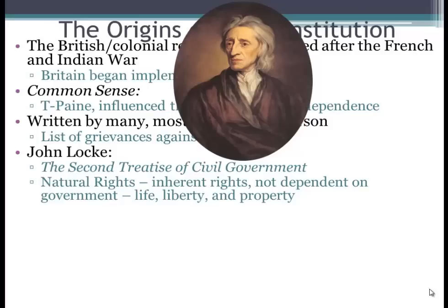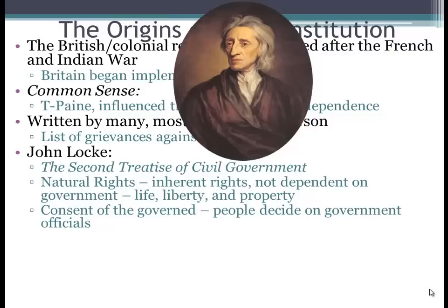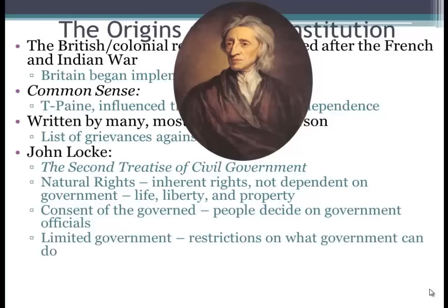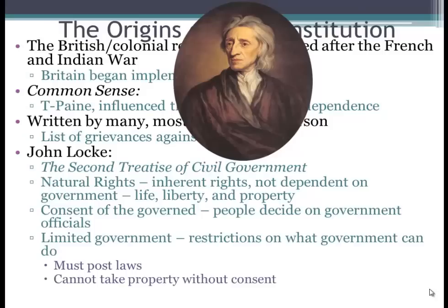John Locke also has the idea of the consent of the governed — that people decide on government officials, and the government is run with the consent of the people. If citizens don't like the government, they have the ability to vote them out of office, and in rare circumstances they can even revolt. Limited government is something Locke advocated — restrictions on what government can do. Governments must post laws so they can't arbitrarily change them, and they cannot take property without consent. Revolting should be saved until injustices are severe.